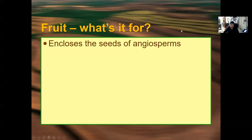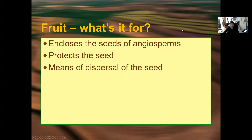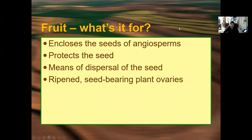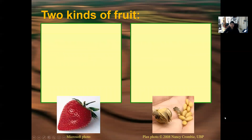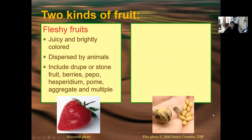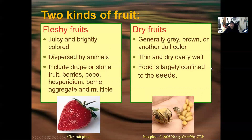Fruit encloses the seeds of angiosperms, protects the seed, and serves as a means of seed dispersal. Fruits are ripened seed-bearing plant ovaries, varied in form, color, size, texture, and number, and they aid in identification. There are two kinds of fruit: fleshy fruits such as strawberries, which are juicy, brightly colored, and dispersed by animals; and dry fruits, which are generally brown or dull in color, with food largely confined to the seeds.